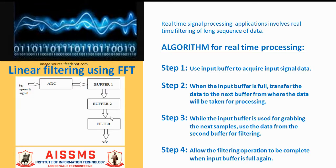Step number 3 is to use the data from the second buffer for filtering, and in the background, let the input buffer be used for grabbing the next sample. Step number 4 is to allow the filtering operation to be completed when the input buffer is full again. This will then be termed as real-time processing.